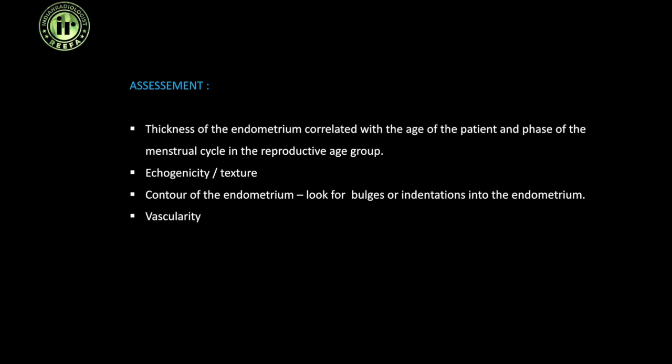What are we assessing in the endometrium? We look at the thickness and correlate it with the age of the patient and which phase of the menstrual cycle they are in. Further from thickness, we look at the echogenicity and homogeneity of the endometrial texture — whether it is homogeneous or heterogeneous, and if there are any focal echogenic or hypoechoic structures within. We look at the contour, any bulges or indentations, and any vascularity or focal areas of altered echotexture with change in vascularity.